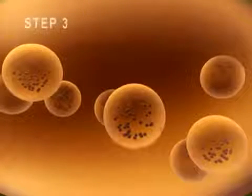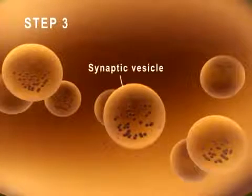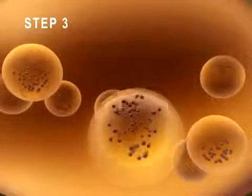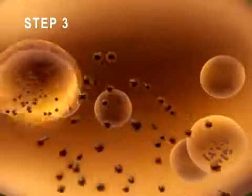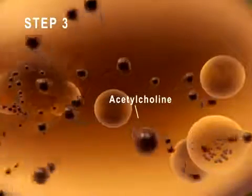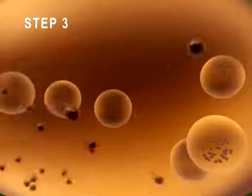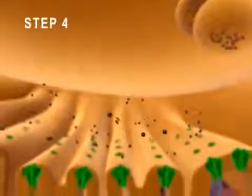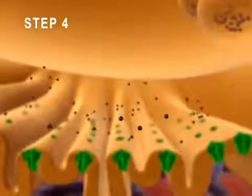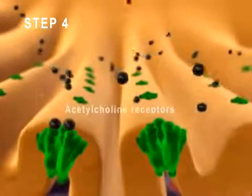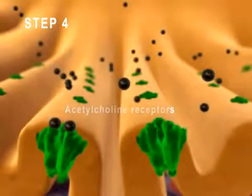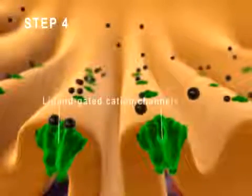Step 3: Calcium entry causes synaptic vesicles to release acetylcholine via exocytosis. Step 4: Acetylcholine diffuses across the synaptic cleft and binds to acetylcholine receptors which contain ligand-gated cation channels.